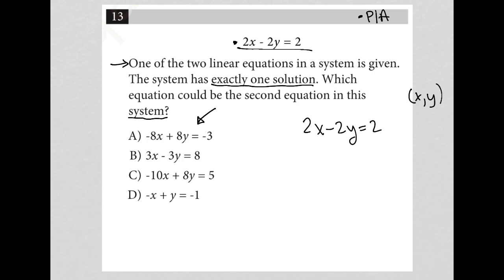By doing that, I'd start off with choice A. I put my negative 8x plus 8y equals negative 3, just plug that in basically, and say okay, well now I have a system of equations. I'm going to solve this by elimination. To solve by elimination, I would multiply my top equation by 4, therefore it would turn into positive 8x minus 8y equals 8.